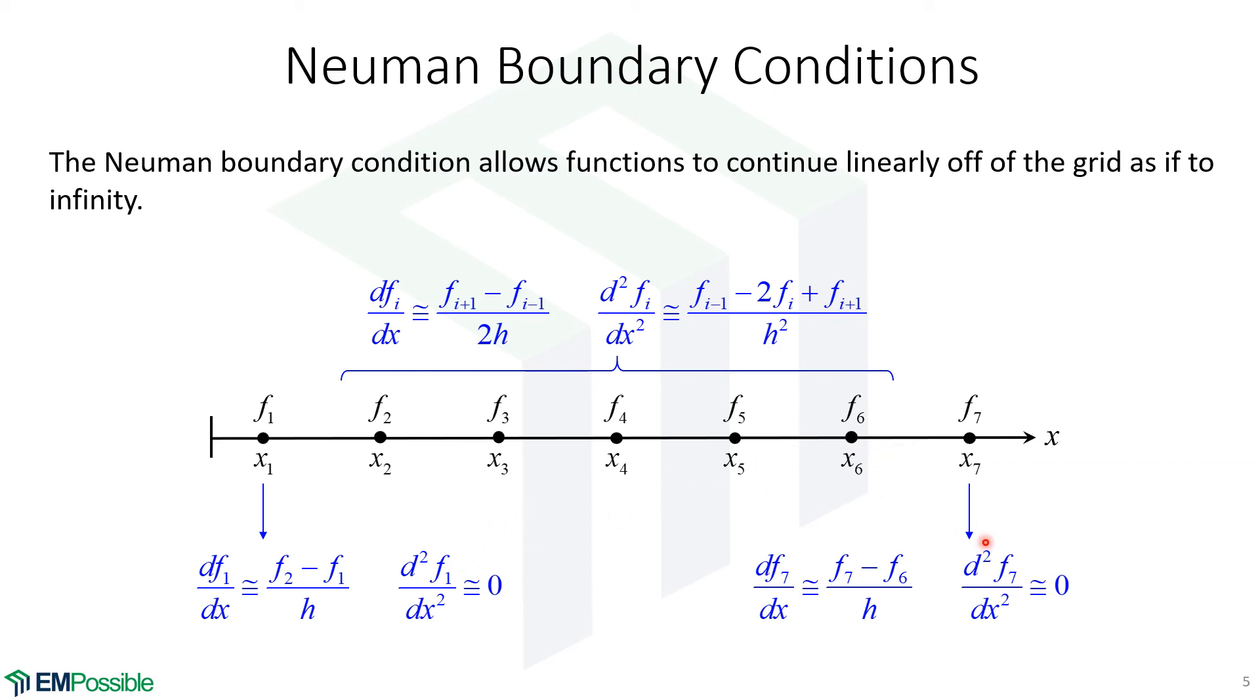Now, the second order derivative, if this function is assumed to continue linearly outside of the grid, that's the Neumann boundary condition, then the second order derivative has to be zero at that last point because a linear function has no second order derivative. And this is used a lot, too, when I have something that is just basically varying linearly and I want it to look like it's just passing outside of the grid. This Neumann boundary condition works beautifully.